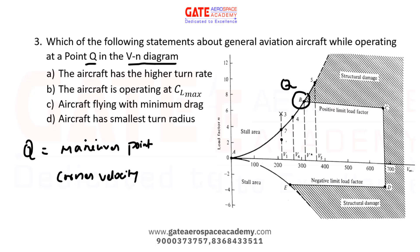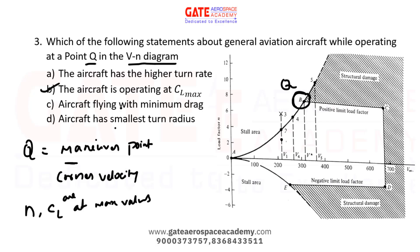This is an MSQ question. The options are: (A) the aircraft has a higher turn rate; (B) the aircraft is operating at CL_max; (C) the aircraft is flying with minimum drag; (D) the aircraft has the smallest turn radius. At the maneuver point, both load factor and CL are at their maximum values. So option B — aircraft operating at CL_max — is correct. This point also corresponds to the smallest possible turn radius, so option D is correct. It also corresponds to the largest possible turn rate, so option A is correct.